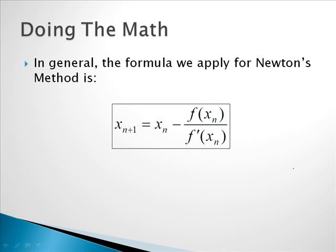To recap everything: Newton's method is a fast, useful method for solving complicated equations that arise in a variety of disciplines. It's based on finding tangent lines and using where the tangent line intersects the x-axis as your new x value, doing successive iterations to approach the intercept. It doesn't always work, so start as close to the root as possible and make sure the iterations are converging. To apply the formula, all you need to do is find a derivative, plug in numbers, and do a little number crunching. If you'd like an example of using Newton's method, there's a follow-up video showing how the formula is applied to approximate a root.